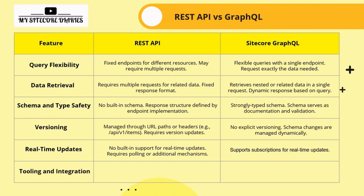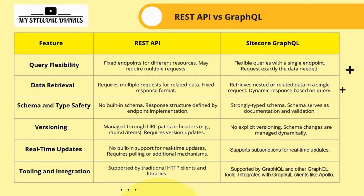On tooling and integration: REST API is supported by traditional HTTP clients and libraries, whereas GraphQL is supported by dedicated GraphQL tools and clients like Apollo. This is the high-level difference between REST API and GraphQL.